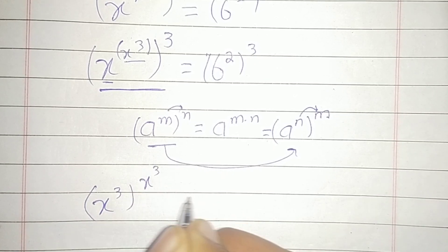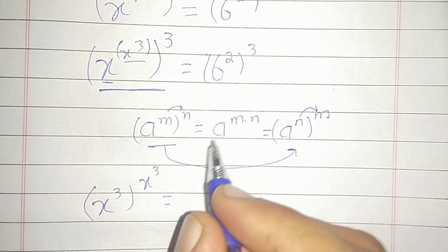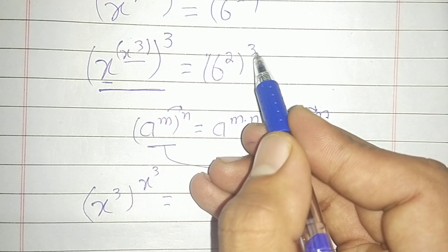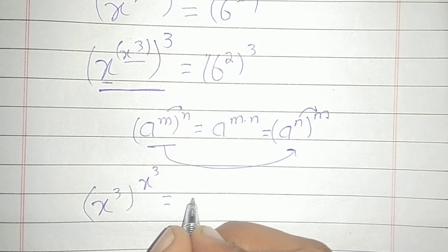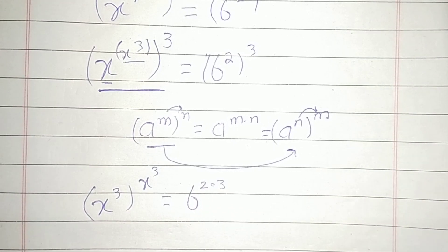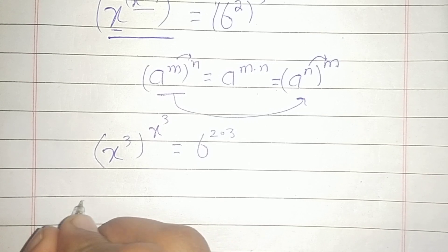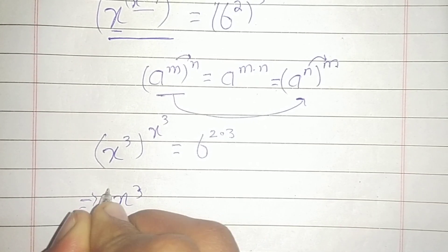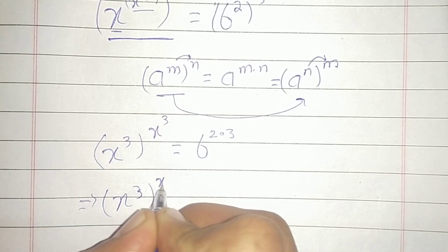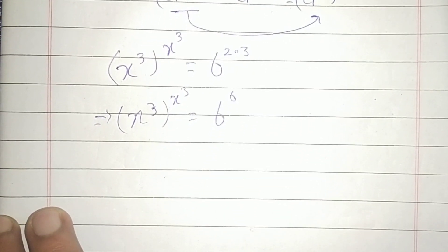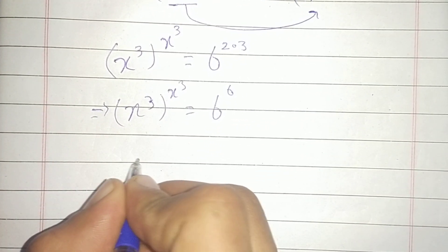And here we have (6^2)^3. We can write this as 6^(2·3). Now (x^3)^(x^3) equals 6^6.